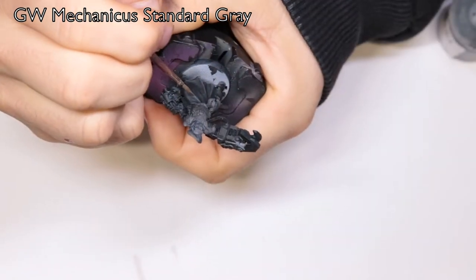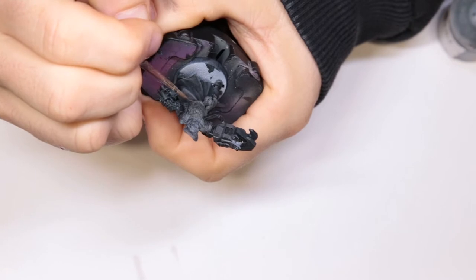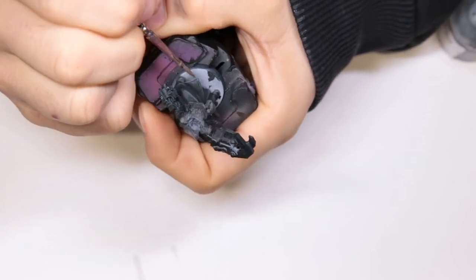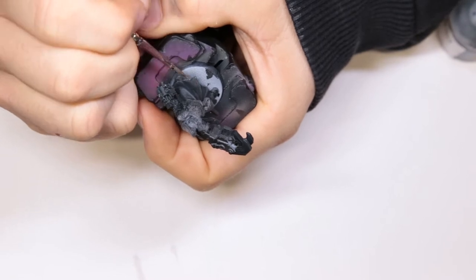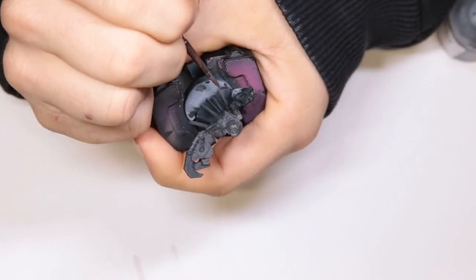Next we're coming through with Mechanicus Standard Grey. This is actually a very subtle highlight without having to change any properties or mix paint. We're just focusing on about 50% of what we've laid down with the Skavenblight Dinge already and focusing towards higher and higher points to make it have a little bit more contrast.